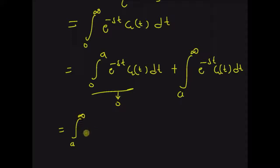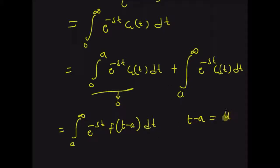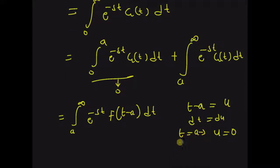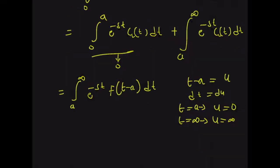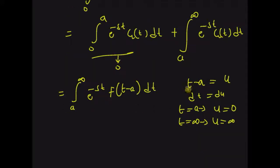We are left with the integral from a to infinity of e^(-st) f(t - a) dt, by using the definition of g(t) for t greater than a. Now by using the substitution t - a = u, so dt = du, and for t = a implies u = 0, and t = infinity implies u = infinity. The new limits are 0 to infinity, and t is replaced by u + a. Therefore this is equal to the integral from 0 to infinity of e^(-s(u + a)) f(u) du.